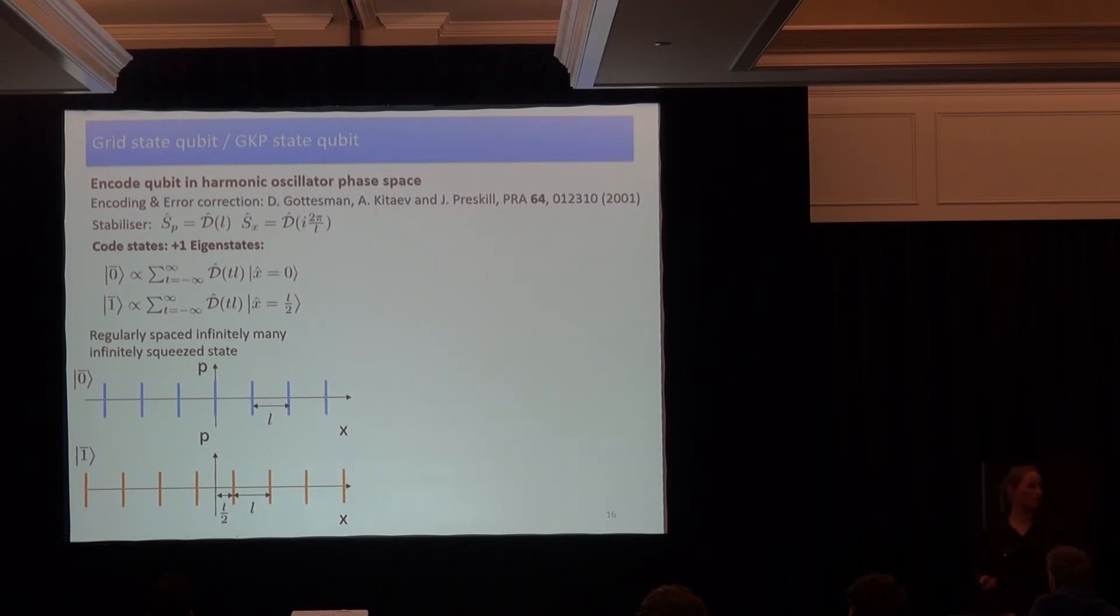So to be in an eigenstate of the displacement, for example, along momentum, we can just pick a position eigenstate, for example, x equals 0, so an infinitely squeezed state along this momentum axis. But then to be also in an eigenstate of the displacement along the x-axis, we need to take copies of this x eigenstate at x equals 0, 2L, and so on, and in both directions. So we will end up with infinitely many, infinitely squeezed states. Shifting this whole state by half the periodicity, we get the other logical state, the one state.